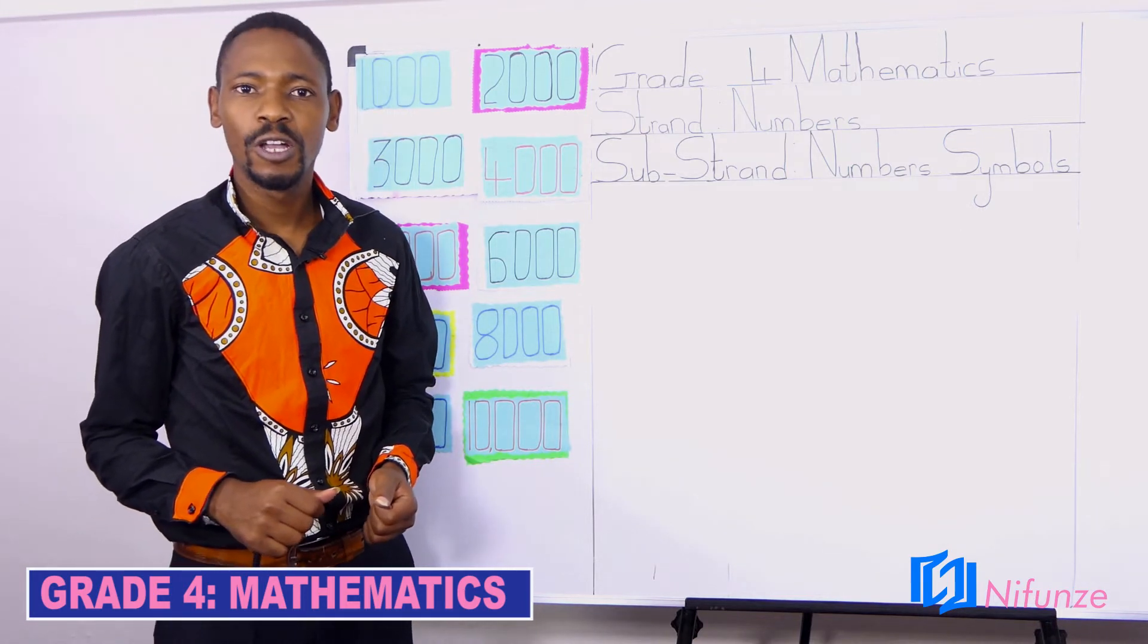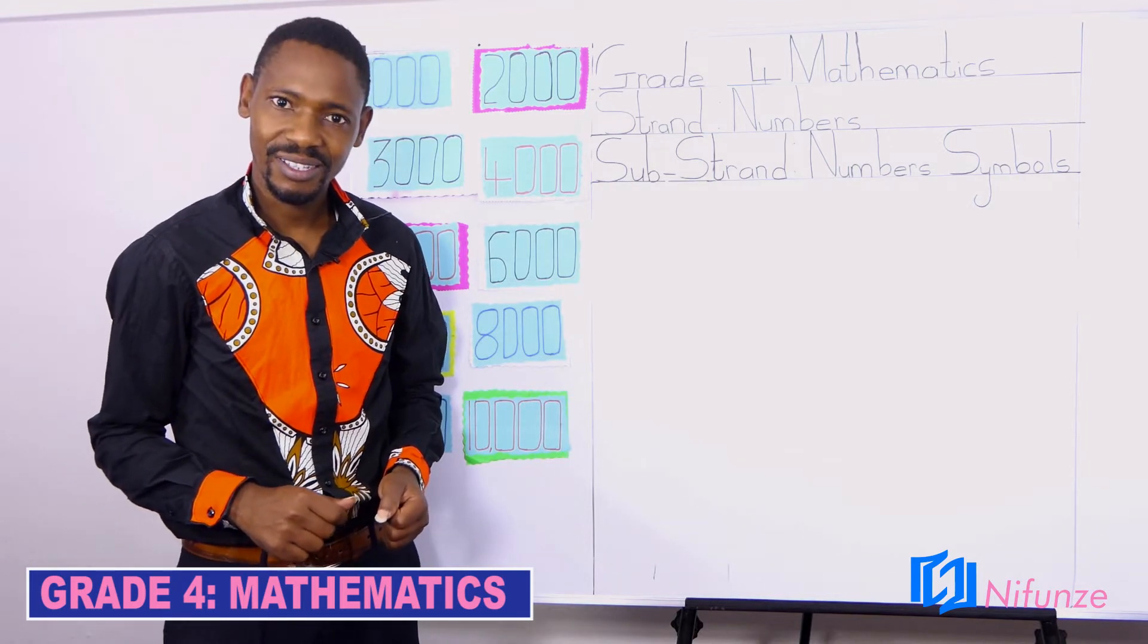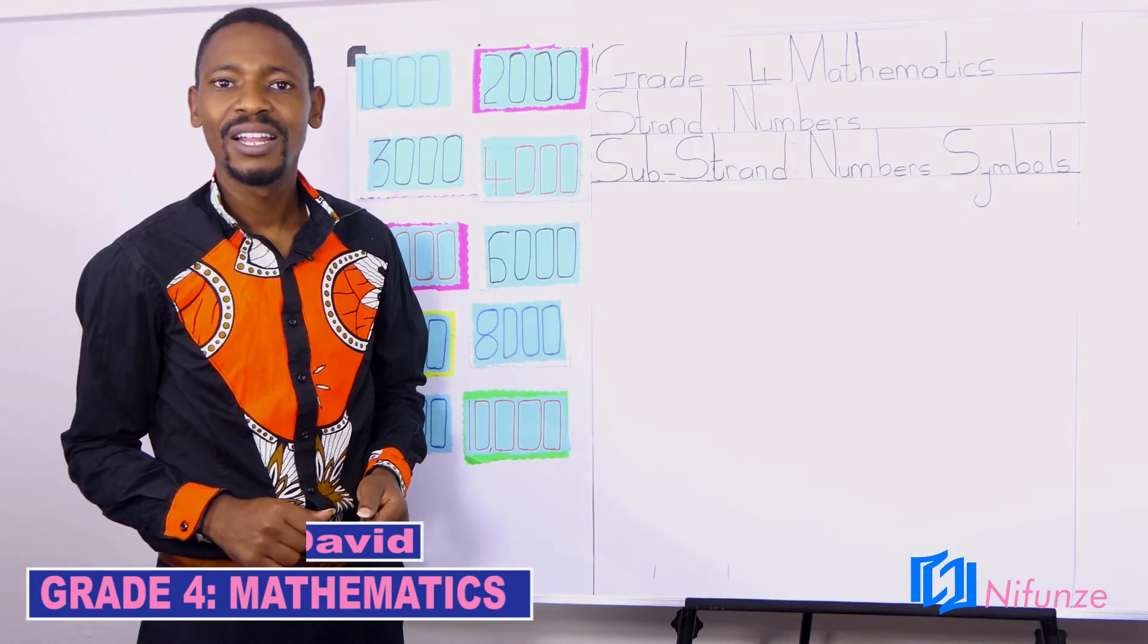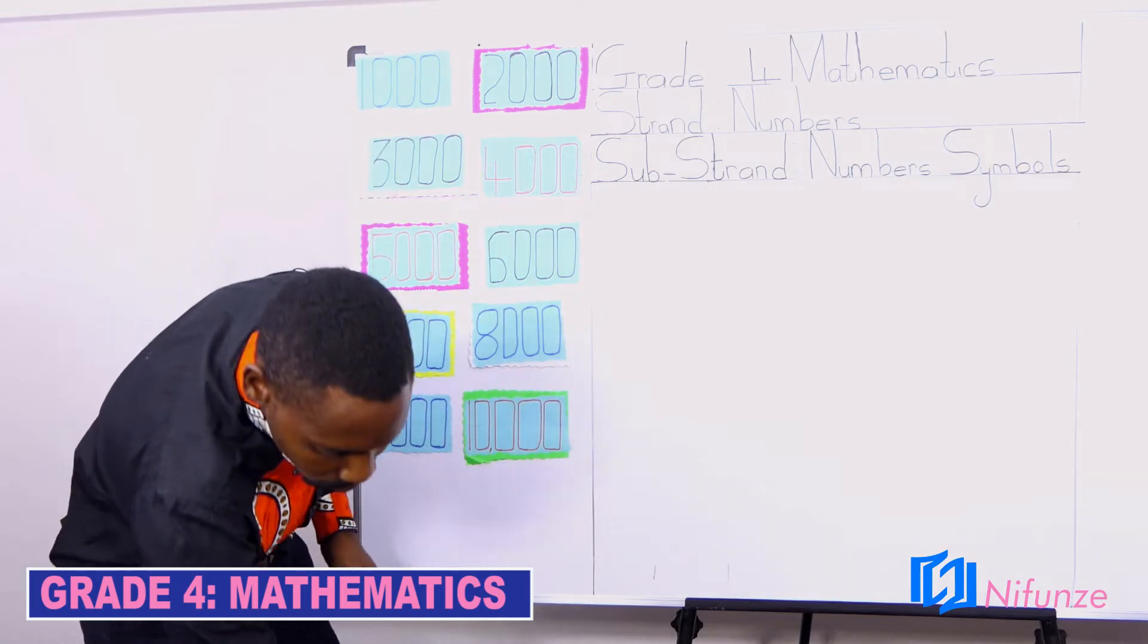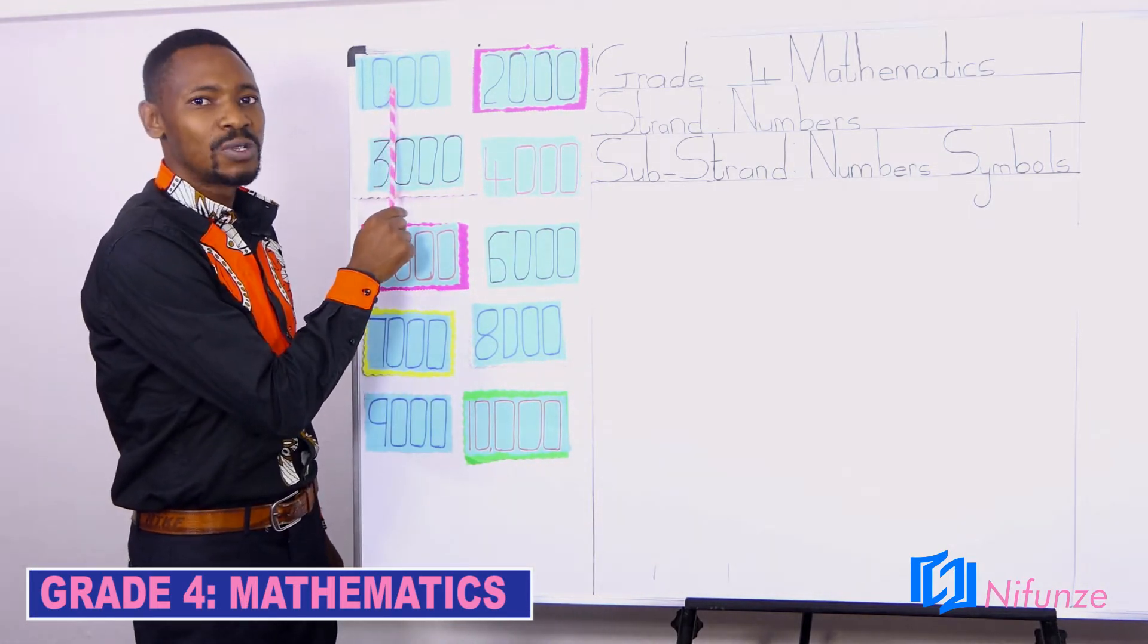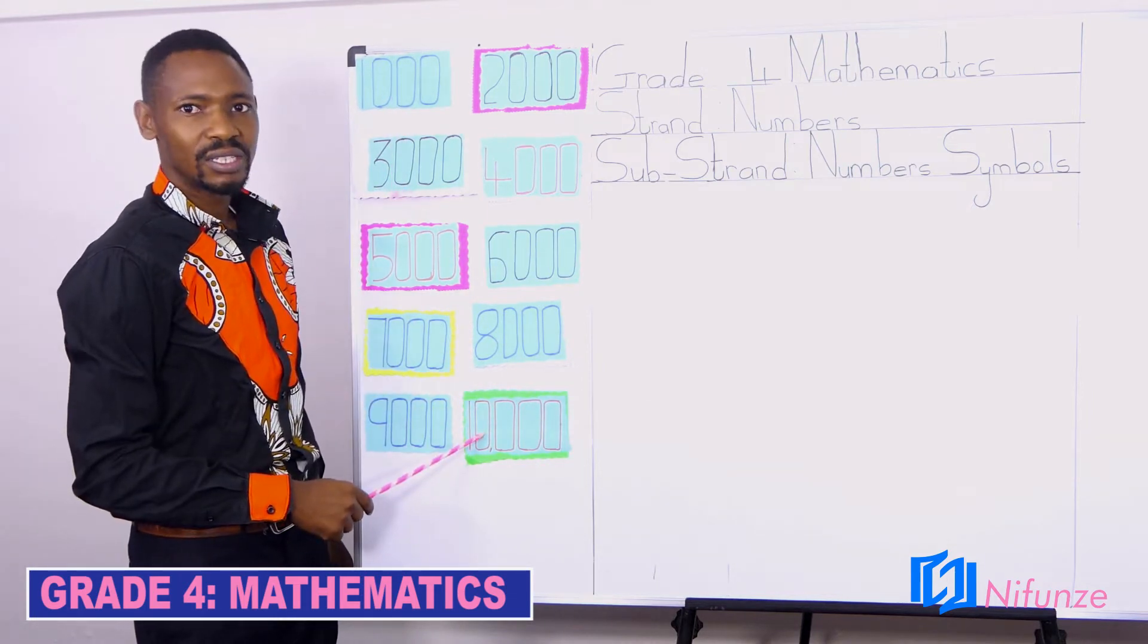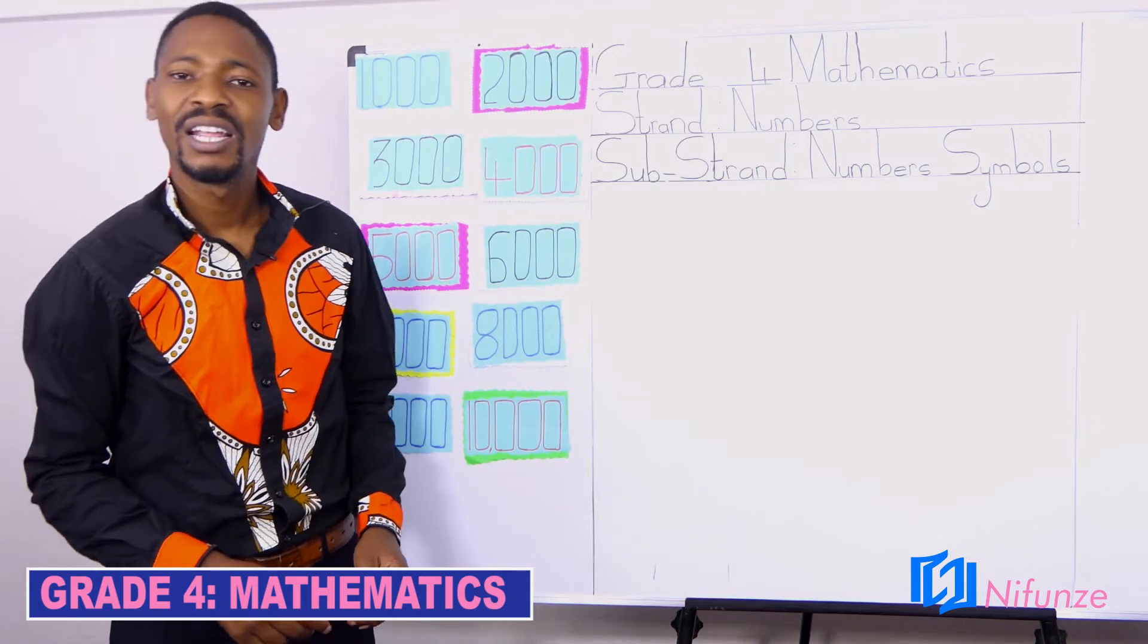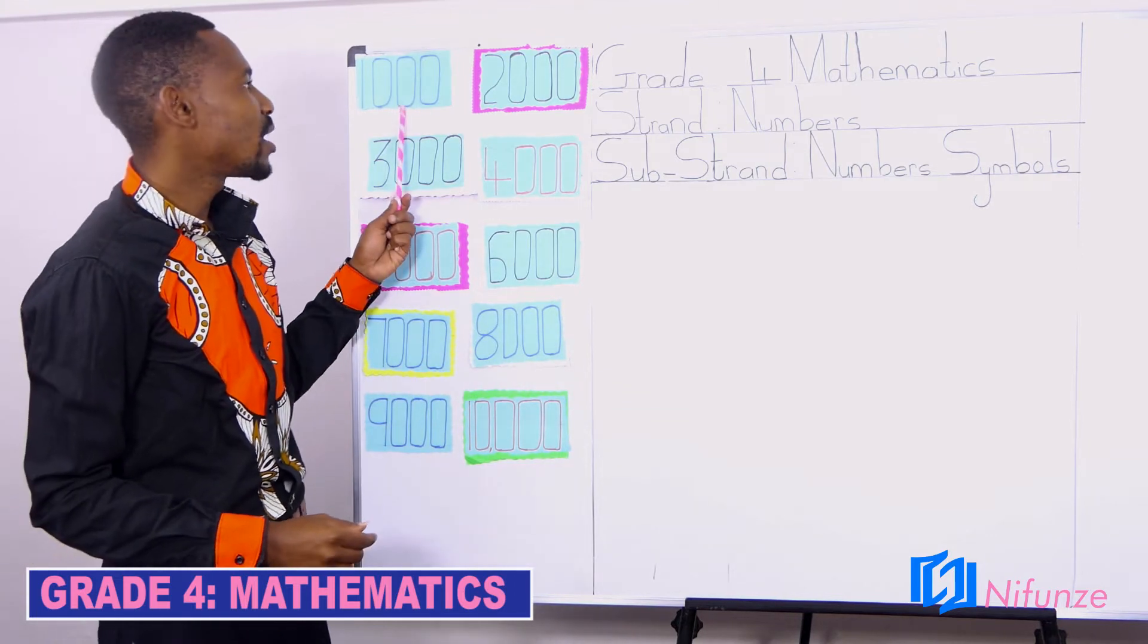Today we are going to learn about number symbols. In grade 4, we learn number symbols from 1,000 to 10,000. In grade 3, you learn number symbols up to 1,000.